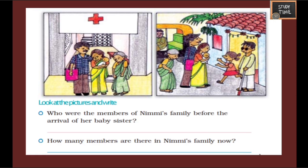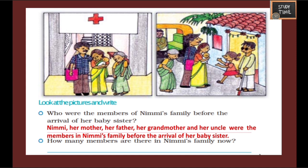Look at the pictures and write. Who were the members of Nimmi's family before the arrival of her baby? In the right side picture you can see grandmother, father, mother, Nimmi, and uncle — so there are five members before the arrival of her baby sister. How many members are there in Nimmi's family now? Including the baby sister, there are now six members in Nimmi's family.